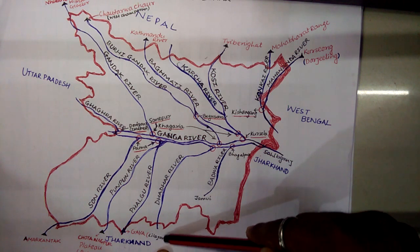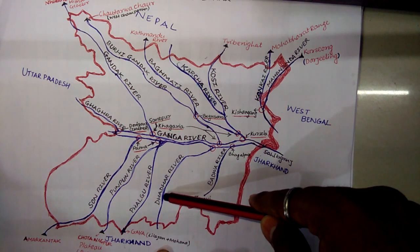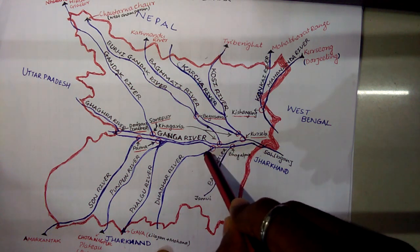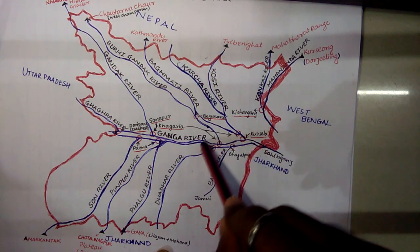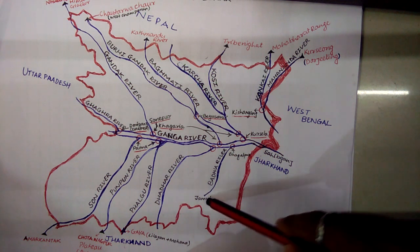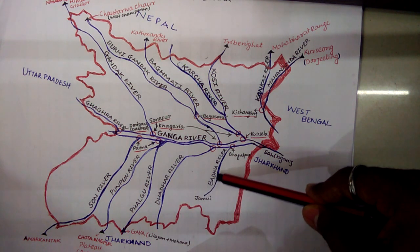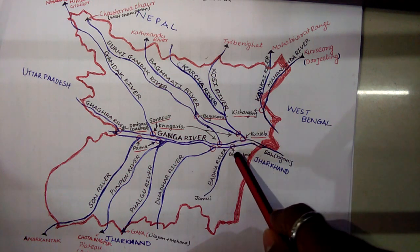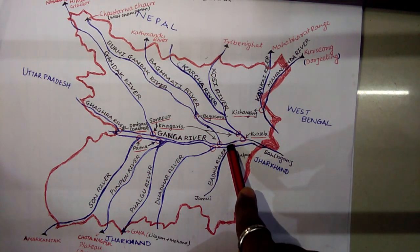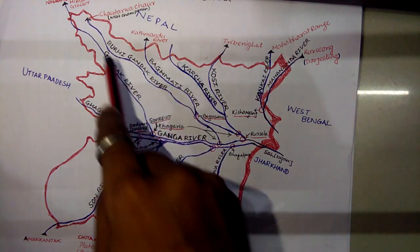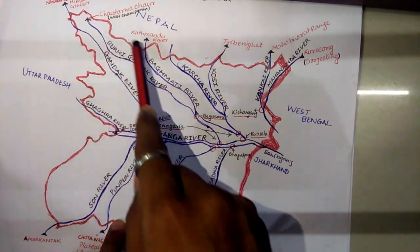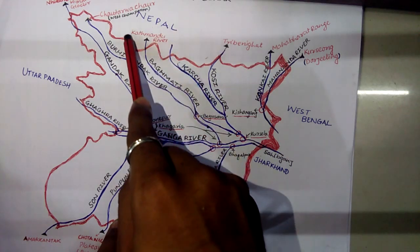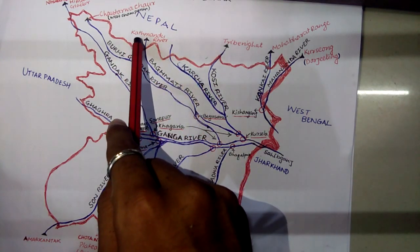The fourth right bank river is the Dhadar river, which merges into the Ganga basically in Bhagalpur district. There is one more river, the Badwa river, which also merges into the Ganga at Bhagalpur district. An interesting point is the Bhagmati river, which flows from Kathmandu.